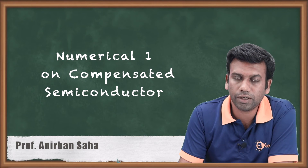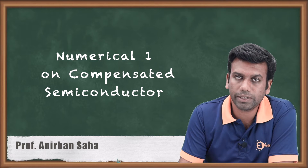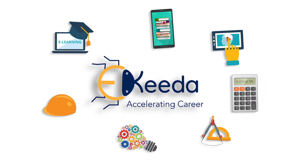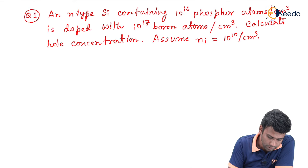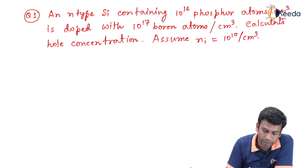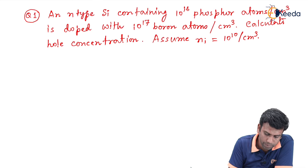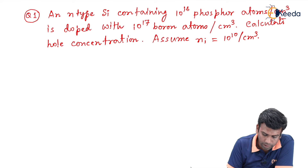Hello friends. In this video we are going to discuss a numerical problem on the compensated semiconductor. The problem is: an n-type semiconductor containing 10 to the power 16 phosphorus atoms per centimeter cube is doped with 10 to the power 17 boron atoms per centimeter cube. Calculate the hole concentration, assuming Ni equals 10 to the power 10 per centimeter cube.